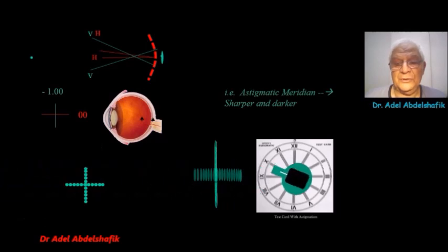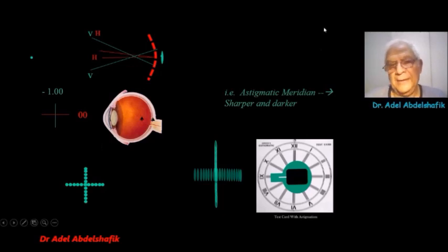So, on correction, we have to apply a cylinder. And this cylinder should be 90 degrees to the sharp dark line, the line of error.